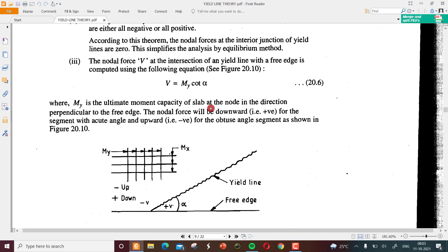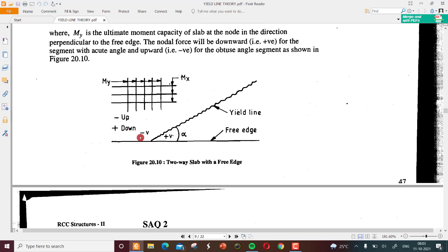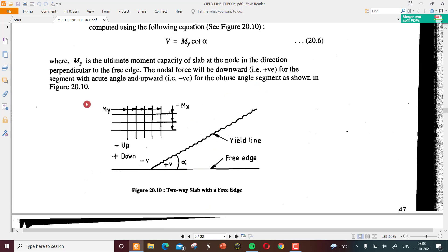That value is given by V equals M_y cot alpha, where M_y is the ultimate moment capacity of the slab at the node in the direction perpendicular to the free edge. The nodal force will be positive for segment with acute angle and upward. It is negative for obtuse angle segment as shown.